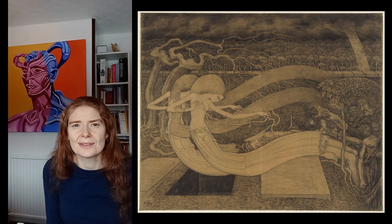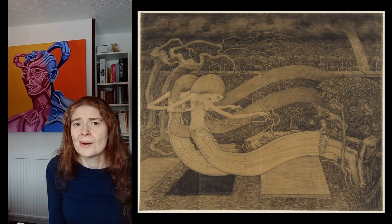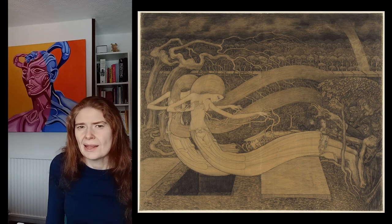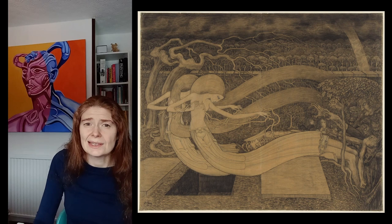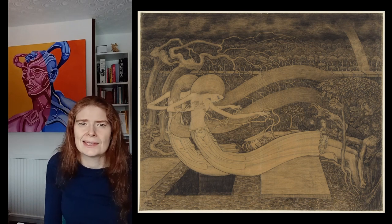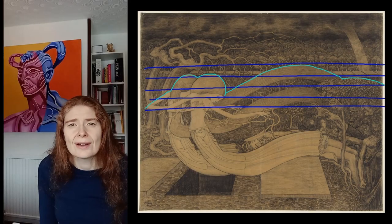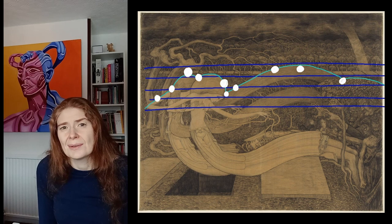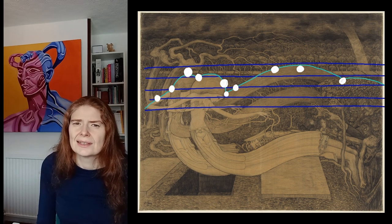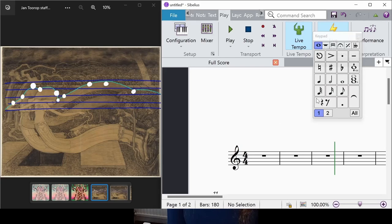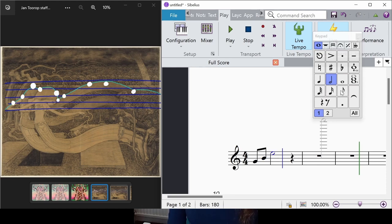I was working on the bridge section of the song and wanted to add something from the image by Jan Toorop. When it comes to the bridge, it can be something different musically, so there is space to experiment. I wanted to create a melody, and that meant I wanted the drawing of a line to give me the shape of a melody. This light bluish-green line is going to give me the shape of my melody. I've also drawn horizontal lines that act as the musical staff. I can now add some white circles along that line, then put these notes into music notation software. I'm using Sibelius First, which is the free version of Sibelius. I'm looking at the circles in the image and using that to show me where to place the musical notes.